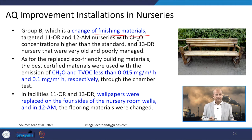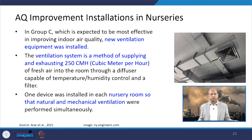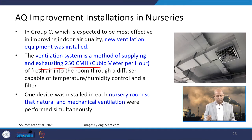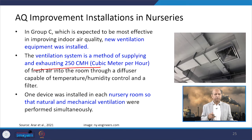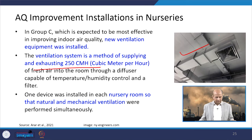Group C received a new ventilation system capable of supplying around 250 cubic meters per hour of fresh air into the indoor environment, ensuring proper diffusion and also providing temperature and humidity control.